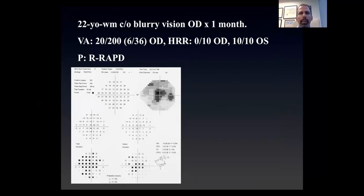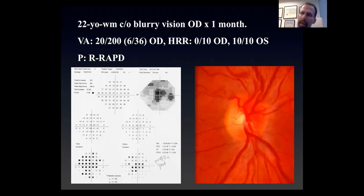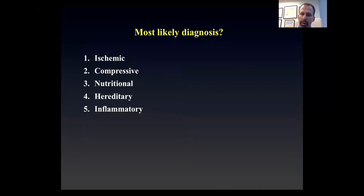Here's a 22-year-old gentleman with blurry vision in the right eye for one month — 20/200 or 6/36, seeing none of the HRR color plates, with a right relative afferent pupillary defect and a central scotoma. The disc shows slight swelling and hyperemia. Typically in the US I would say this is probably typical optic neuritis. However, this patient's brother — who is 15 years old and is my patient — has Leber hereditary optic neuropathy. He had the same thing happen a year ago in one eye then the other. So in this case, knowing the family history, this is going to be Leber hereditary optic neuropathy.